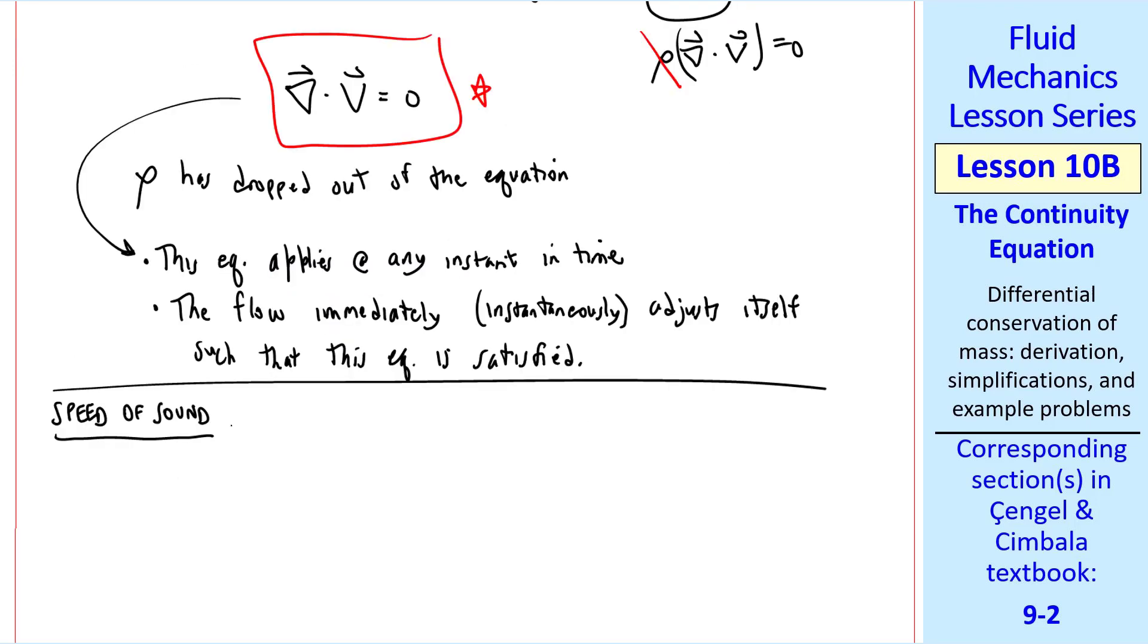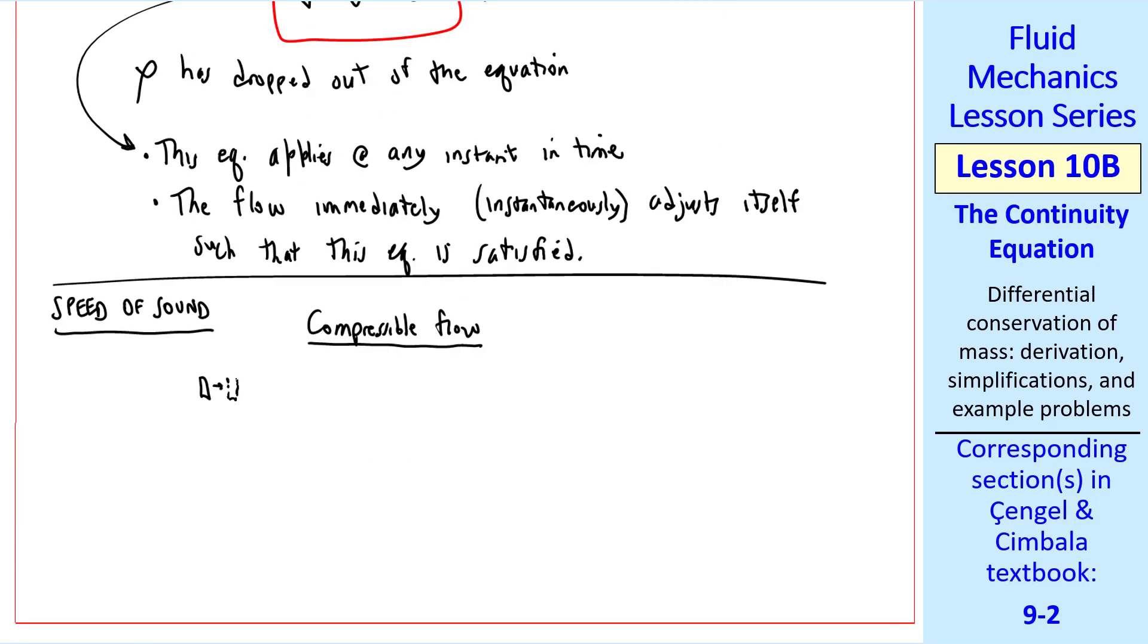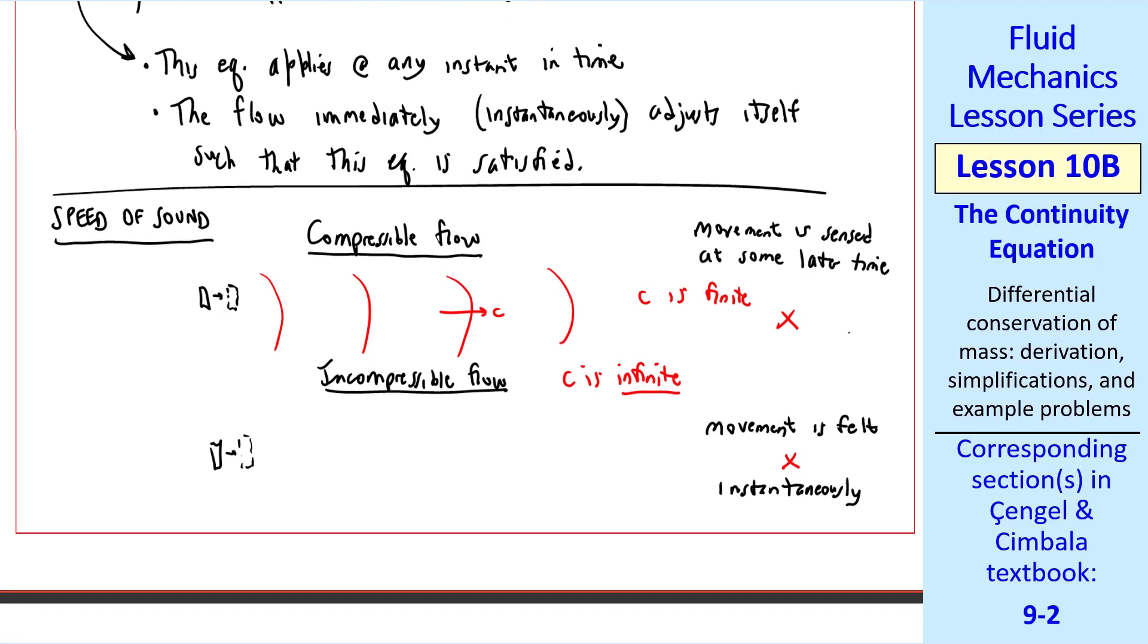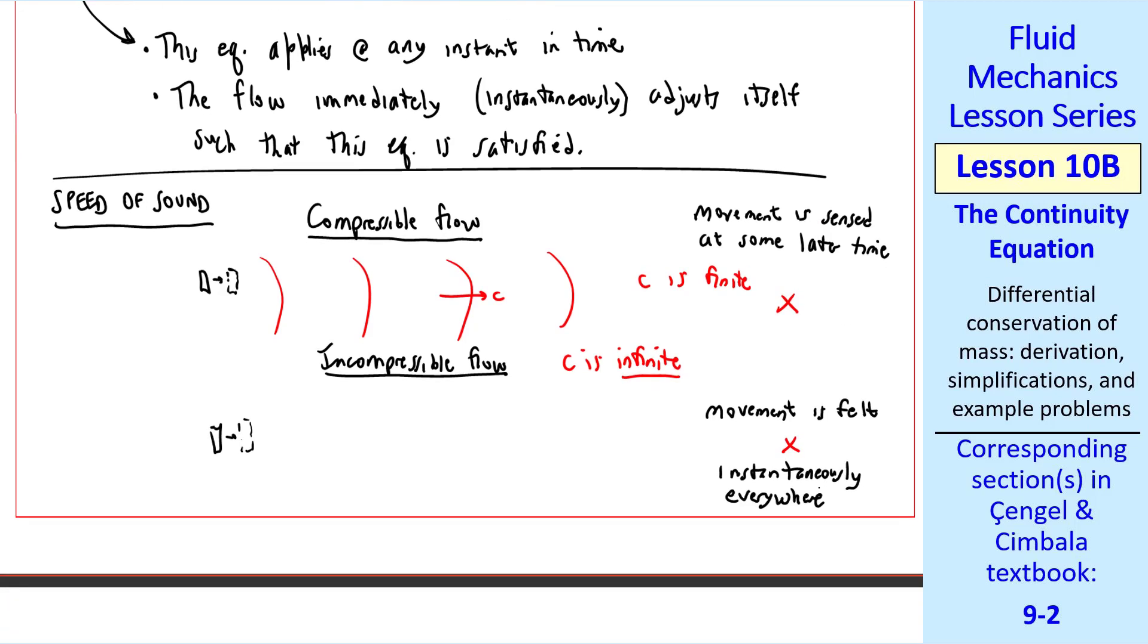I can explain this better by using the speed of sound. For a compressible flow, like the flow of air, if we have some object and we just move it, there will be pressure waves that move forward at some speed c, which is the speed of sound. C is finite. So at some point here, the movement is sensed at some later time, since it takes time for the sound waves to travel, or these pressure waves from moving the object to travel to location x. For an incompressible flow, c is infinite. If I have the same body that moves in the same way, in an incompressible fluid, the movement is felt instantaneously at this location. In fact, it's felt instantaneously everywhere in the flow.